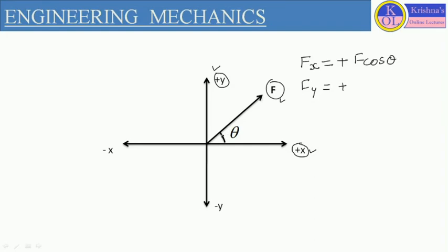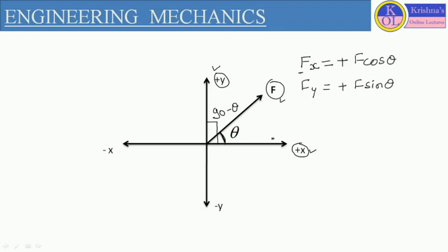This force F is making angle theta with the x direction, and the complete angle is 90, so the other angle should be 90 minus theta. But here we will define Fx as F sin theta, and if we want to define in terms of cos theta, it will be F cos(90 minus theta). Since we are considering the inclination of this force with the x direction, Fx will be F cos theta and Fy will be F sin theta.